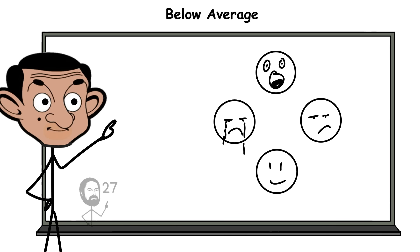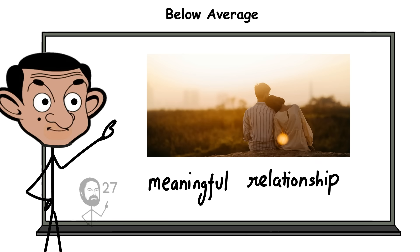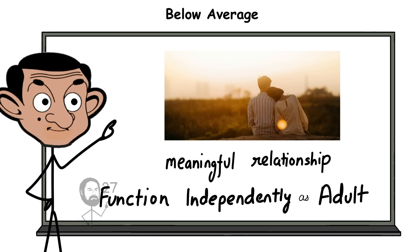Emotional understanding, empathy, and social awareness are usually normal, allowing them to build meaningful relationships and function independently as adults.